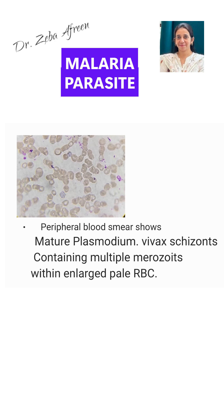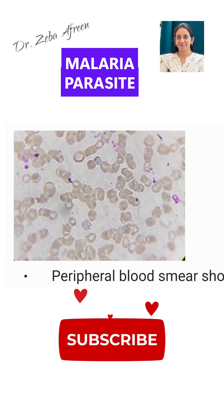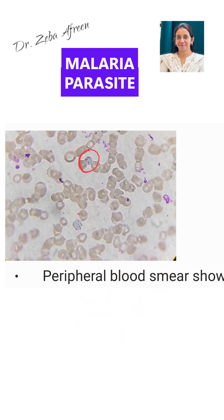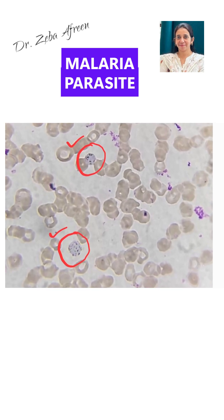This is a peripheral blood smear showing two mature Plasmodium vivax schizont forms. Look at these RBCs which I have encircled — they have multiple blue to purple chromatin dots. These are the merozoites.